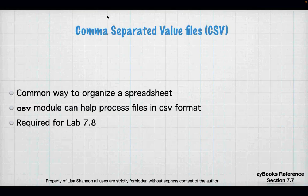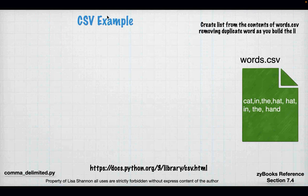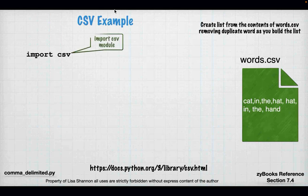Now to something more relevant to our labs: comma-separated value files. A lot of data is organized in CSV format. A CSV format is a row where individual data elements are separated by commas, then another row of data elements separated by commas, and so on. This is where you're going to use the CSV module, because it can help process files that are in CSV format. This is for lab 7.8 specifically. You start by importing CSV — just tell Python to copy all that CSV processing ability into your memory space.